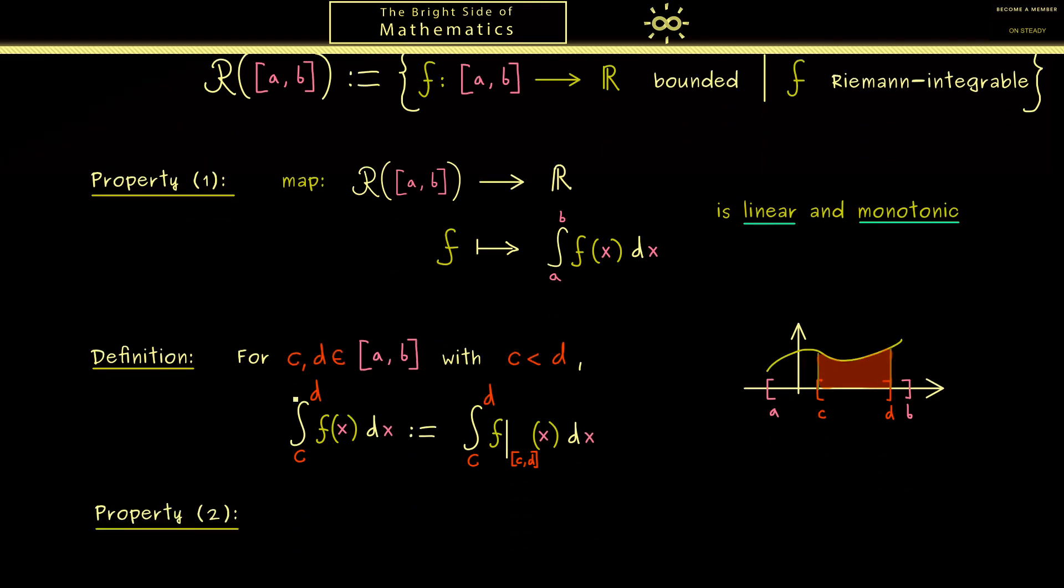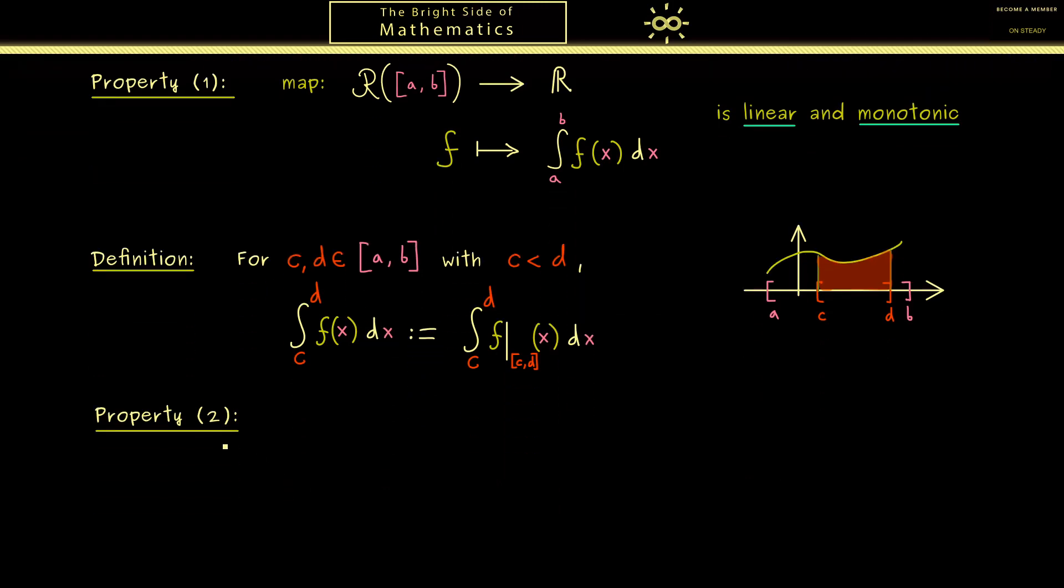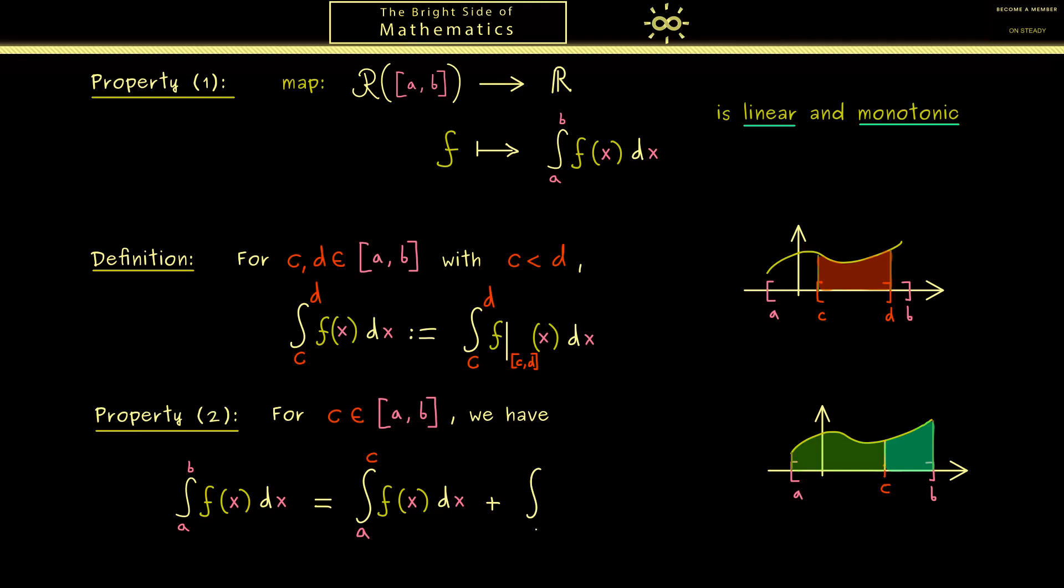However, by having different limits on the integral sign, now we can talk about property 2. There we just need one intermediate point c from the interval [a,b]. So if we look at the picture again, we just have one point somewhere in the middle here. And there you see this single point can split the whole area we have into two parts. Or to say it more formally, the one integral can be written as the sum of two integrals.